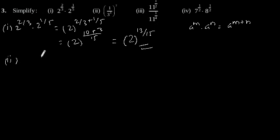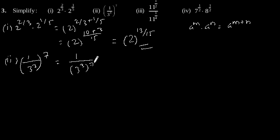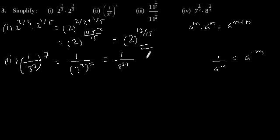Next part: 1 upon 3 to the power 3, whole to the power 7. This equals 1 upon 3 to the power 21. Here we use the formula that 1 upon a to the power m can be written as a to the power minus m, so this will become 3 to the power minus 21.